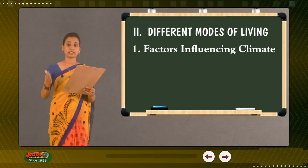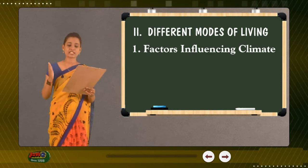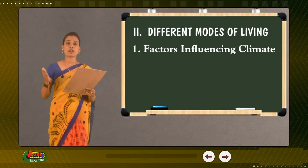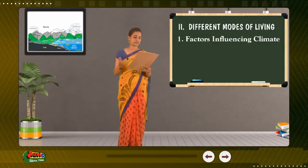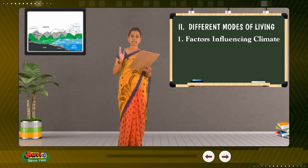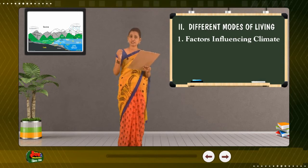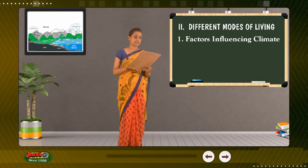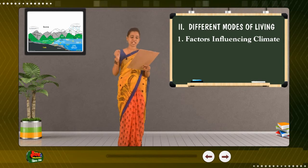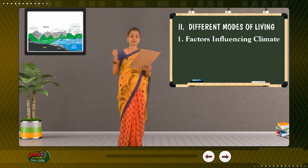On the other hand, climate represents the long-term atmospheric patterns within which weather occurs. Climate zones are areas with distinct climates which occur in an east-west direction around the Earth and can be classified using different climatic parameters. Climate zones are belt-shaped and circular around the poles.